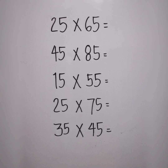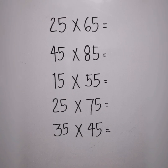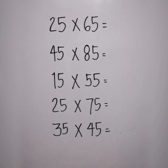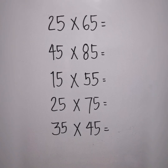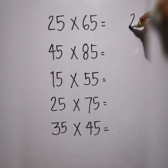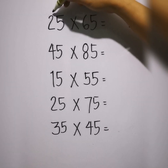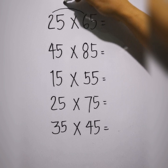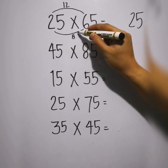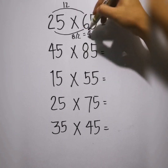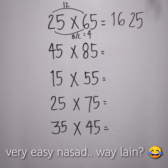So next I'm going to teach you is how to multiply two-digit numbers that end with 5. Both numbers should end with 5. So we have 25 times 65. The first step: copy 25. The next step: multiply 2 times 6, this is 12. Then add them: 2 plus 6 is 8. Divide by 2, so that is 4. Add them: 12 plus 4 is 16. So the answer is 1625. Very easy, right?